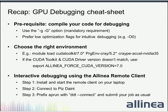To recap the key things you need to do if you want to debug an application for GPUs: first, you need to compile your code for debugging. You need to add the dash capital G option when you want to debug. You can also use low optimization flags for more intuitive debugging, and you need to load the right environment.